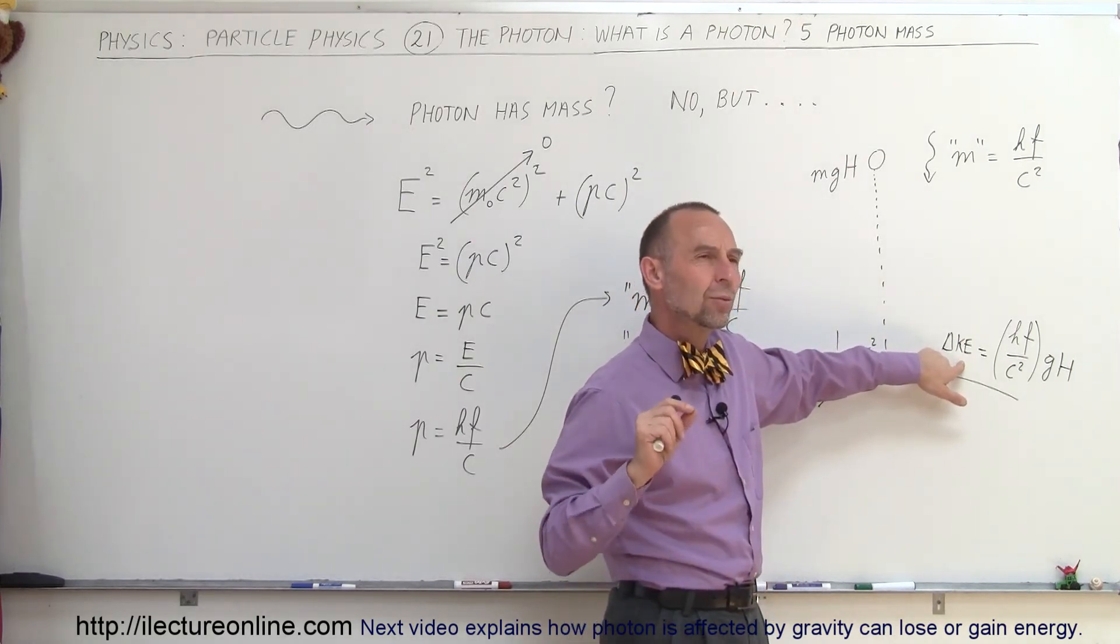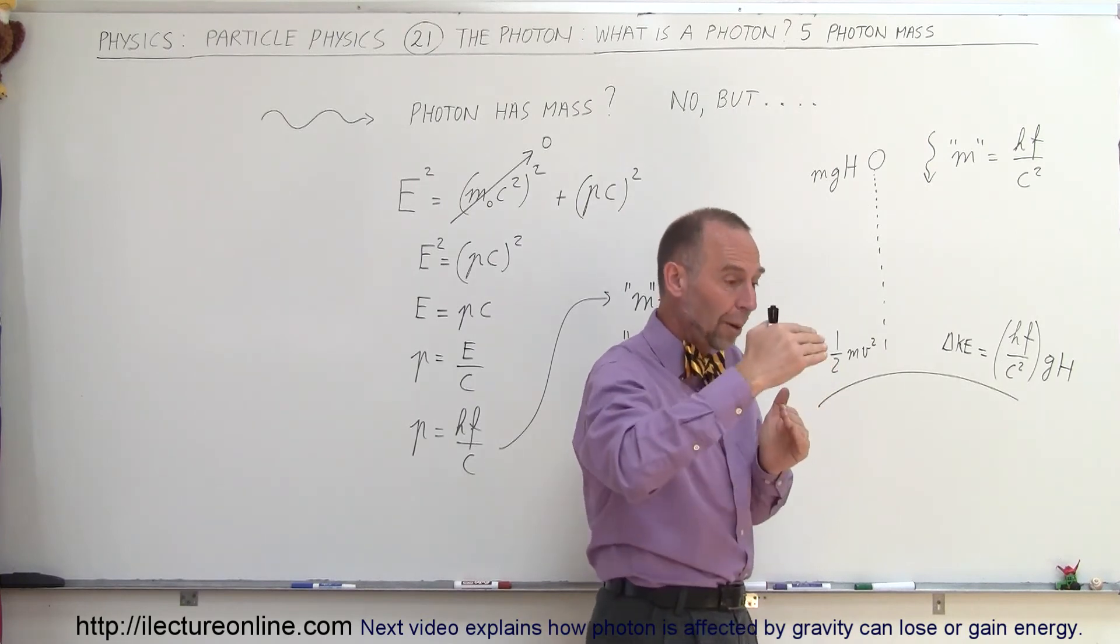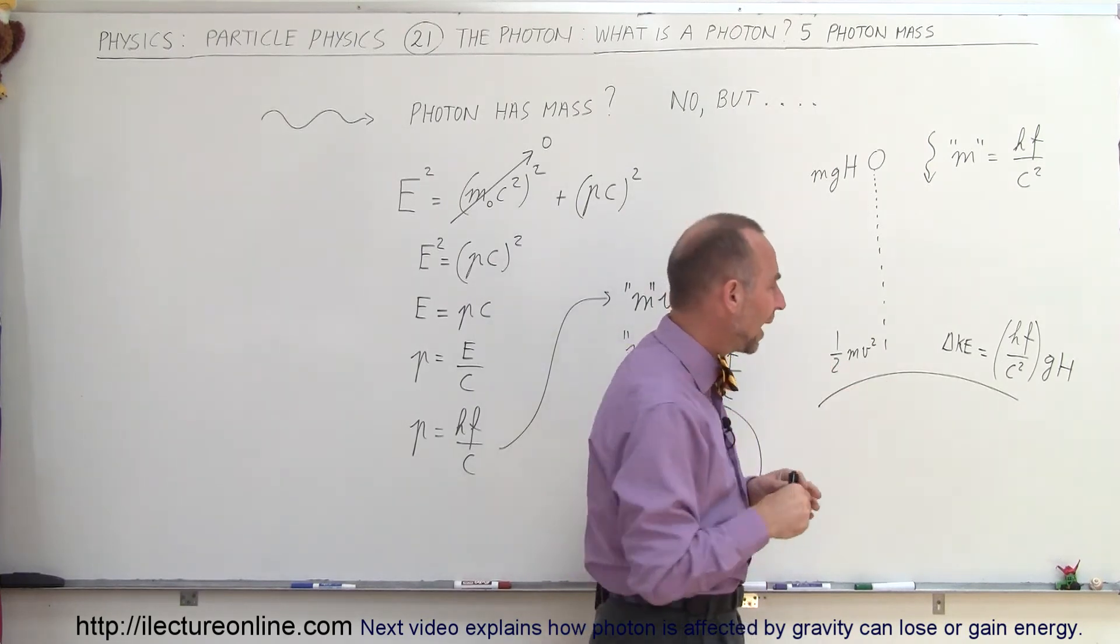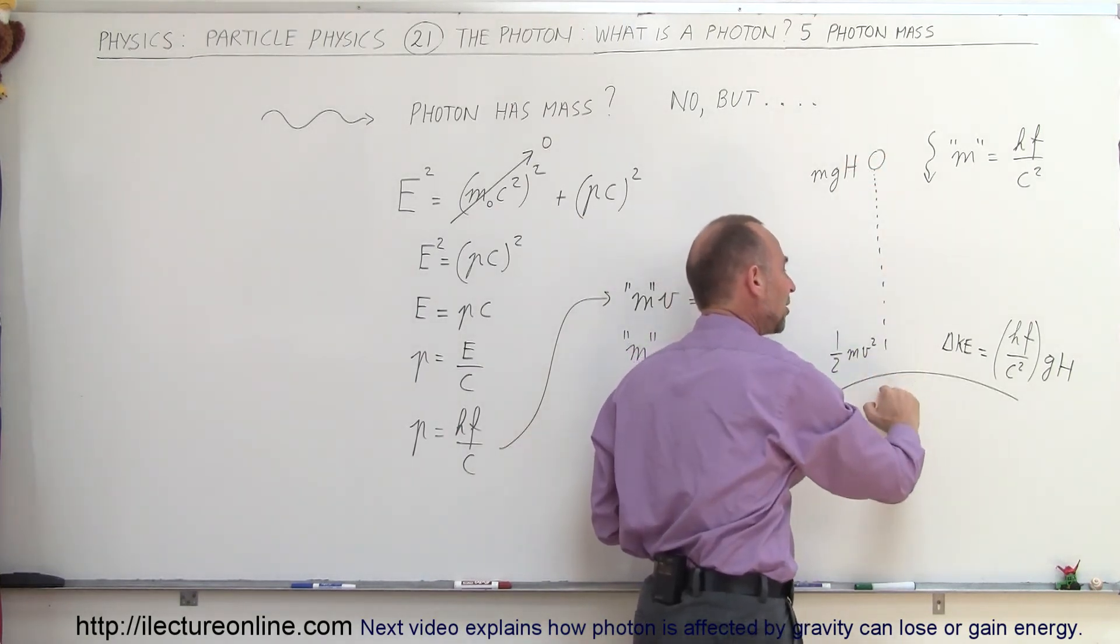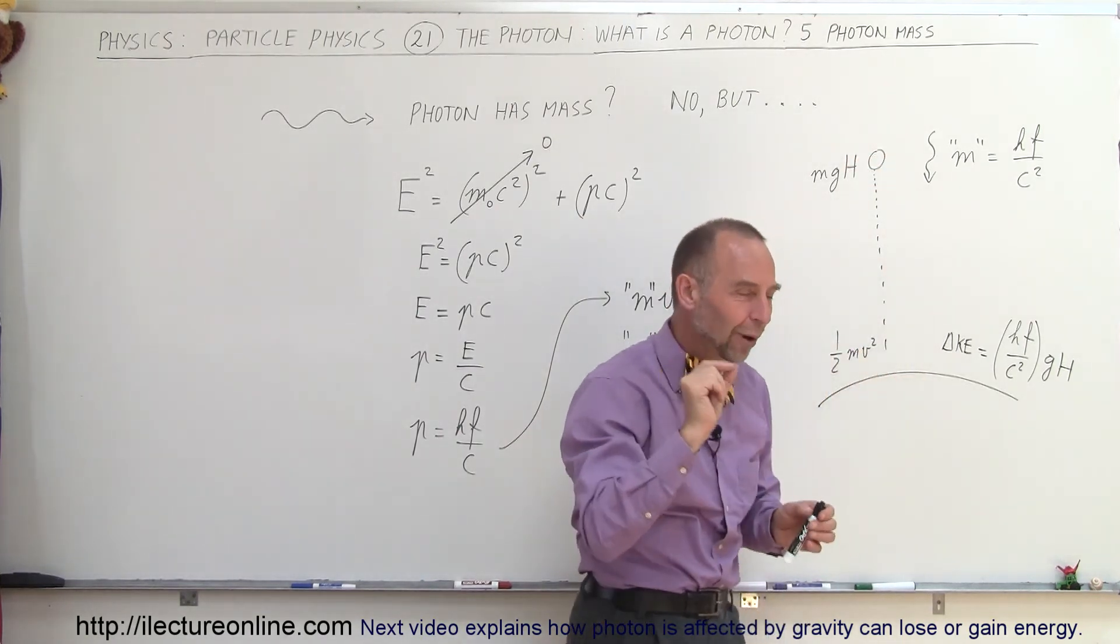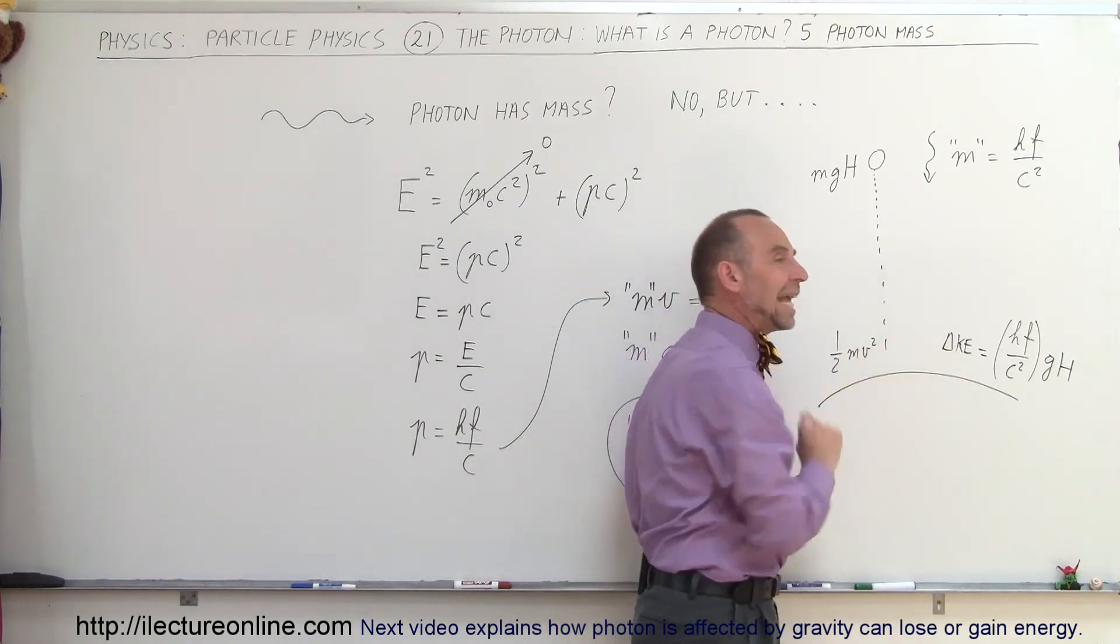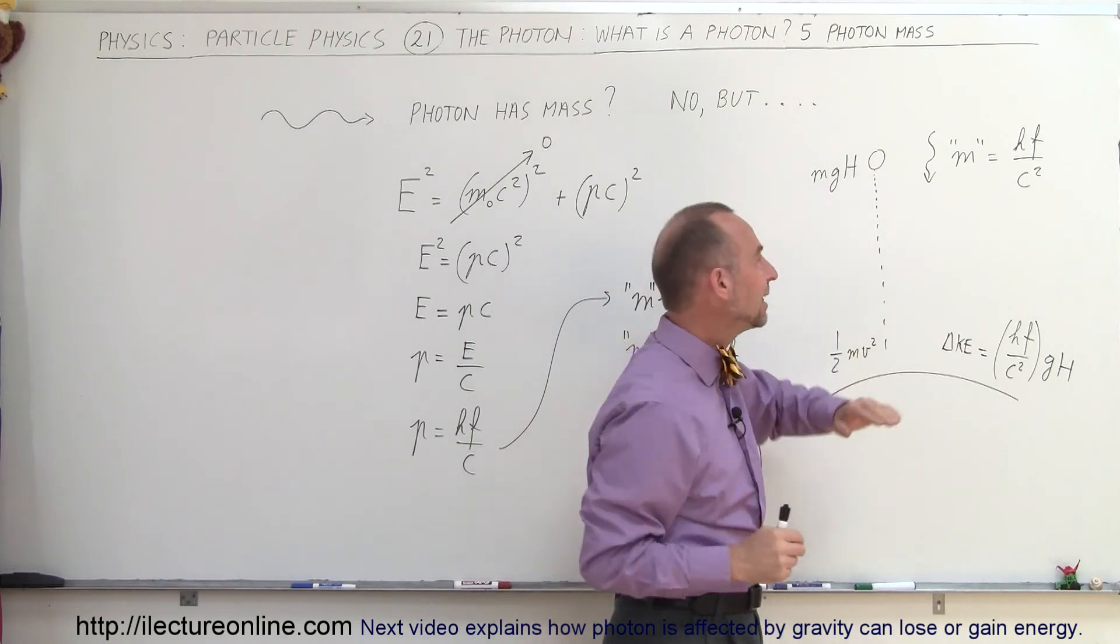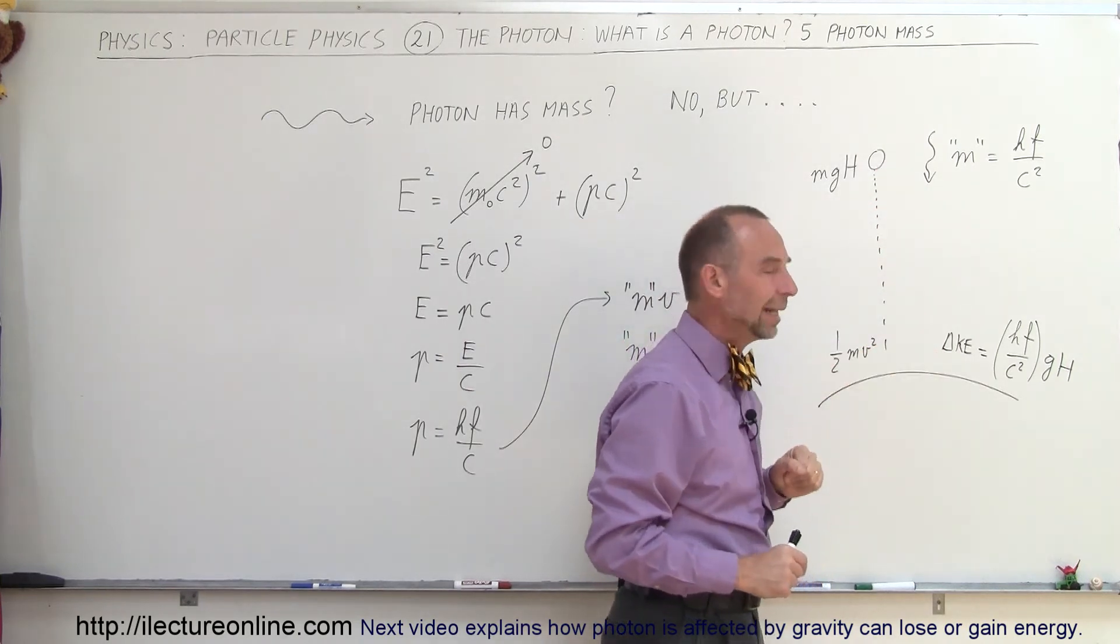So we can say that a photon will actually gain kinetic energy. And therefore, what would happen? Well, that means that the frequency would go up and that the wavelength would go down. So actually, it will have a slightly shorter wavelength as it gets pulled in by the gravitational force of the Earth, slightly shorter wavelength, a slightly higher frequency because of the increased gain in kinetic energy from the energy conversion from potential energy to kinetic energy.